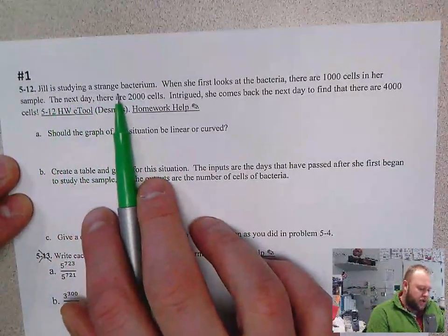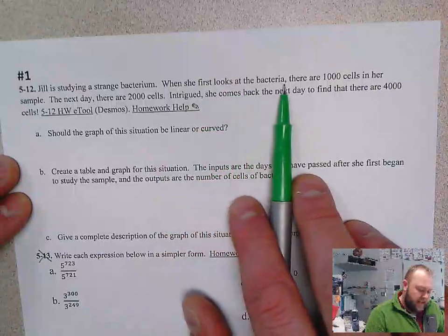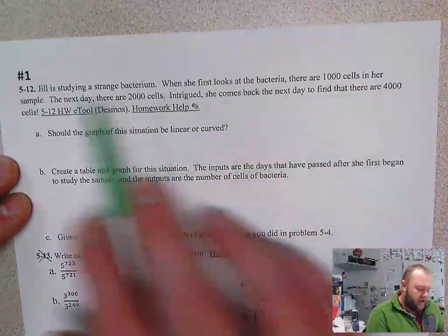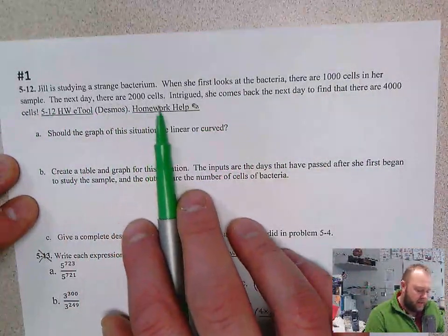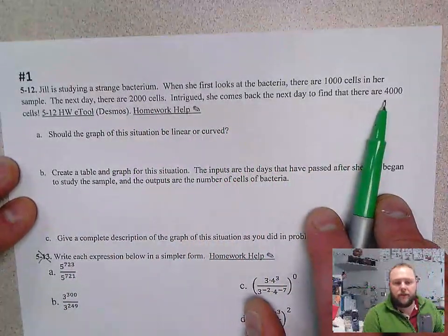Jill was studying a strange bacterium. When she first looks at the bacteria, there are 1,000 cells in her sample. The next day there are 2,000 cells. Intrigued, she has come back the next day to find there were 4,000 cells.